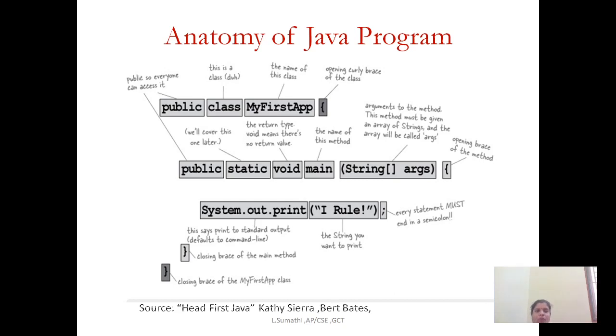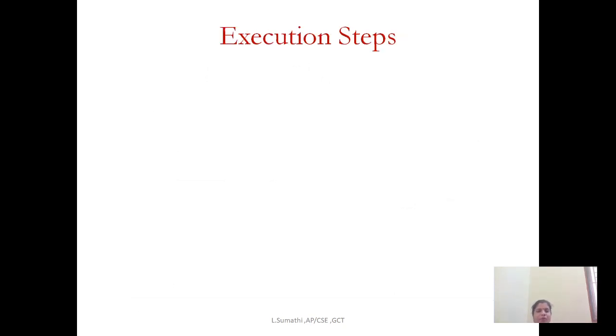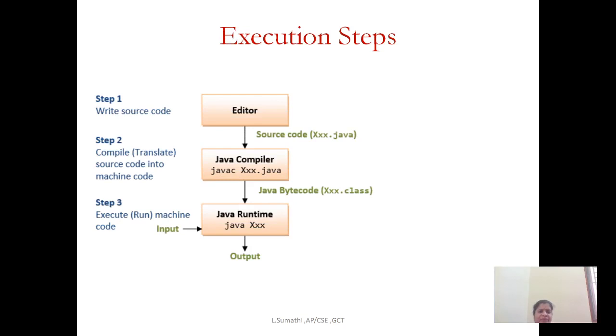Now we will see how to execute your program. The first step is you have to write your source program and you have to save it with an extension .java. Then you have to pass this to your compiler. Your compiler is javac. By invoking this command, you invoke your Java compiler. It will take your source code and it will convert into your byte code, which makes Java platform independent.